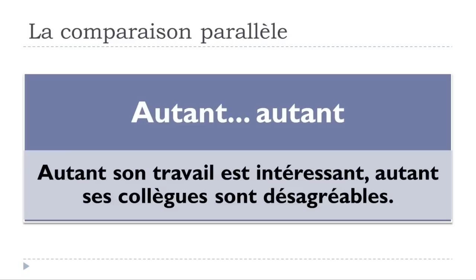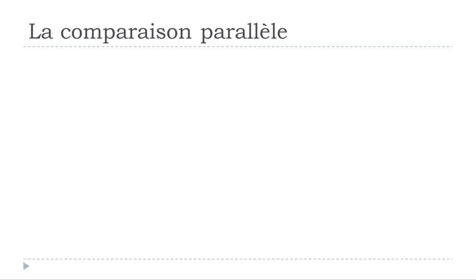For AUTANT AUTANT: AUTANT SON TRAVAIL EST INTÉRESSANT, AUTANT SES COLLÈGUES SONT DÉSAGRÉABLES. His job is interesting, but his colleagues are not so nice. You compare two equally important things. Start with AUTANT, put la virgule, continue with AUTANT and the second clause.